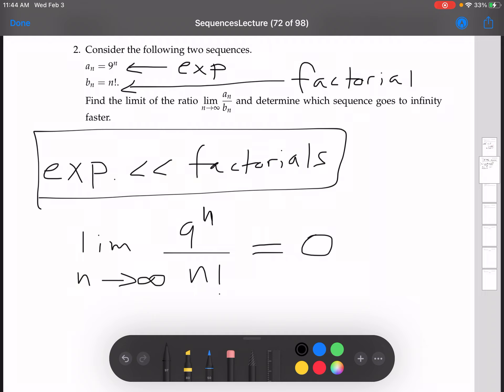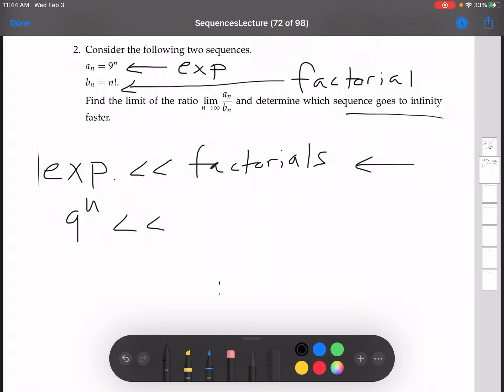Now, as far as which sequence goes to infinity faster, that really follows from this fact right here, that exponentials go to infinity slower than factorials. So the exponential, that's a to the n, that's a_n, right? That's the 9 to the n. And n factorial, that's the factorial.